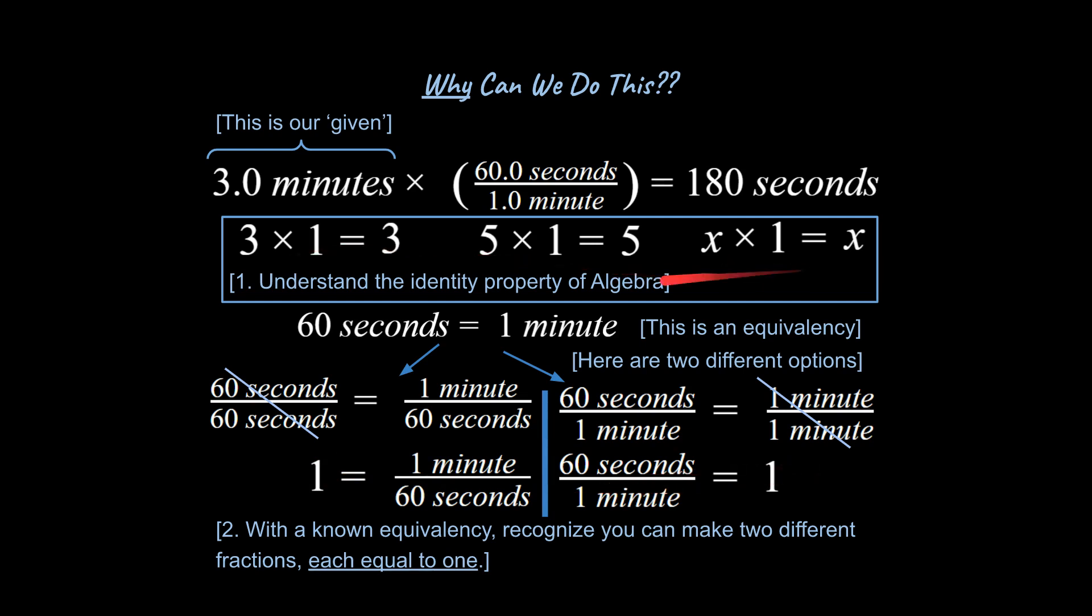Now remember what we had just talked about, what I had reminded you of with the identity property of algebra. And I want you to anticipate where I'm going with this. We take the given. We're going to multiply it by a fraction that is equal to one. And we end up with the same value that we started with. It's just going to be counted differently.